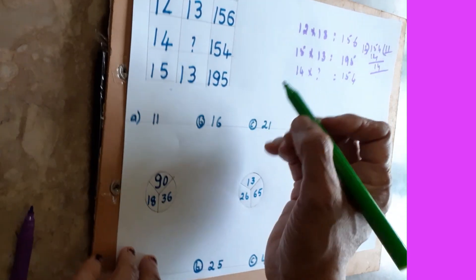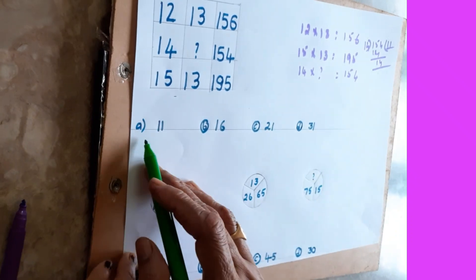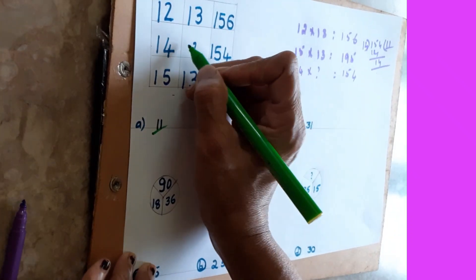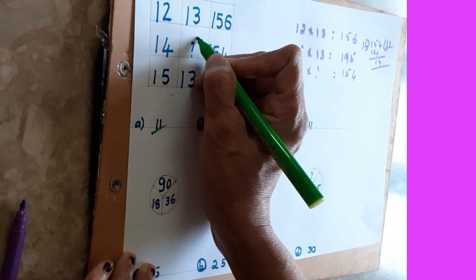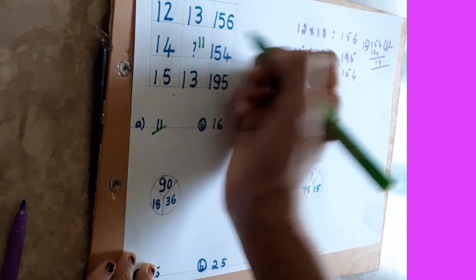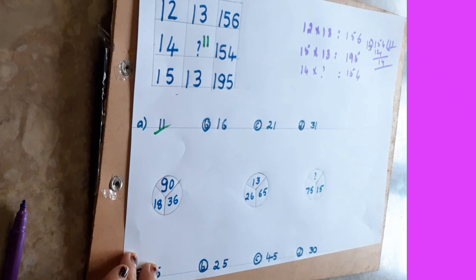So what you will get — you have the option 11. So in this place you will get 11, because 14 into 11 is 154.